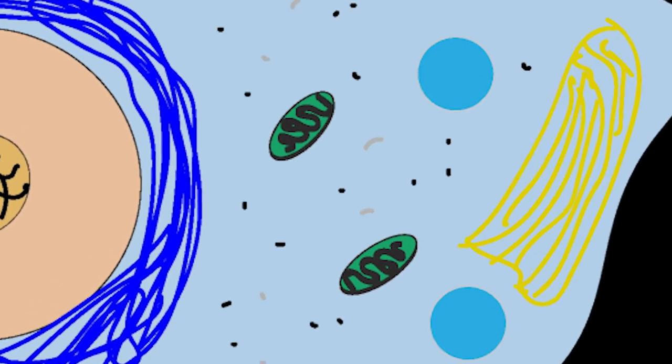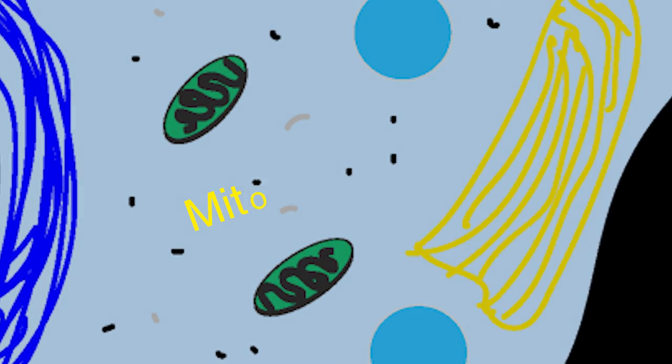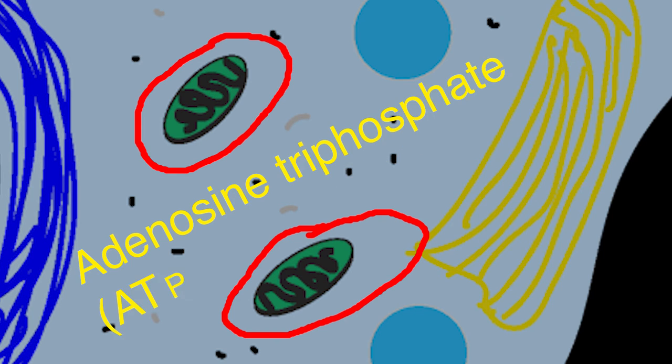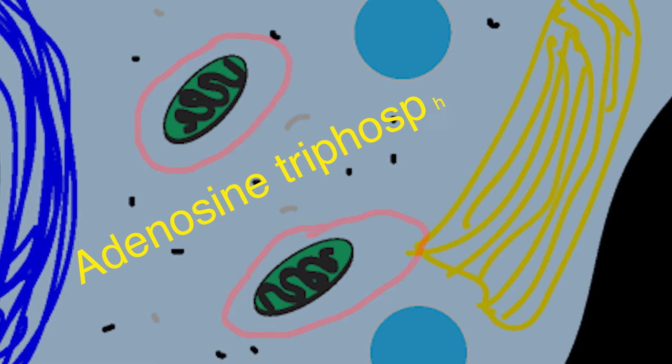Mitochondria are another type of organelle found within the cytoplasm. Mitochondria are sometimes called the powerhouse of the cell, as they are responsible for manufacturing adenosine triphosphate, also called ATP. As we will find out in the video on signaling between neurons, ATP is critical to cell functioning and the transmission of neural messages.